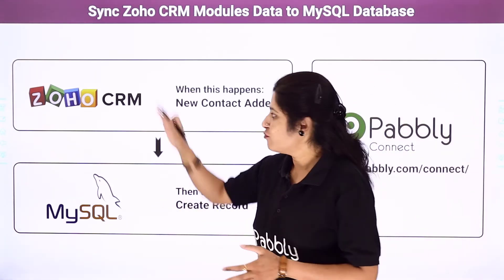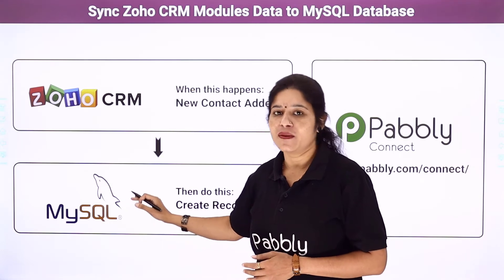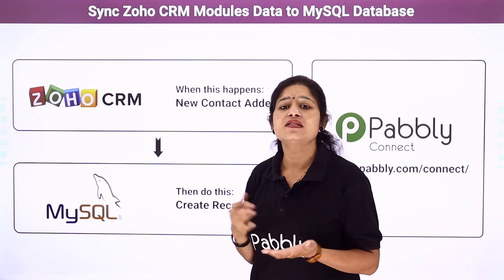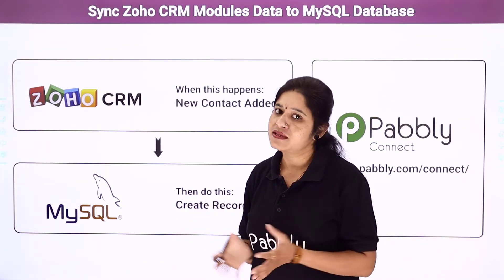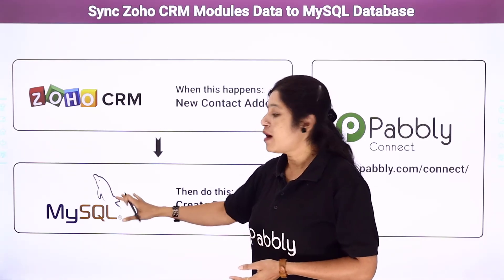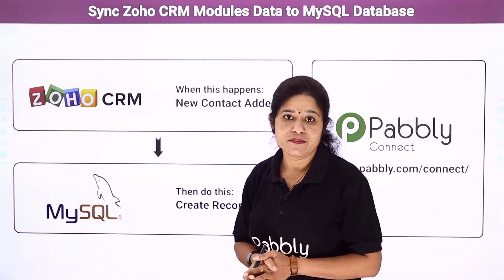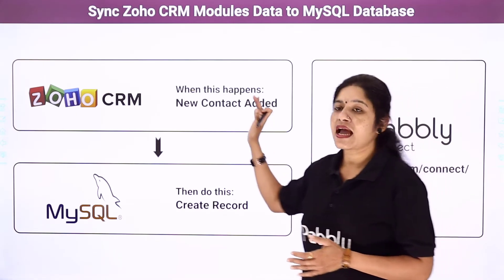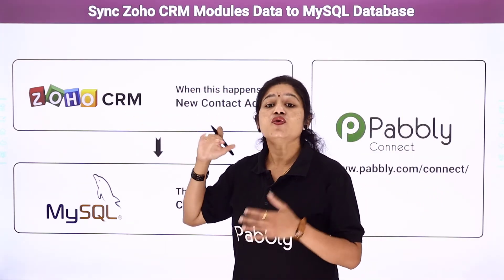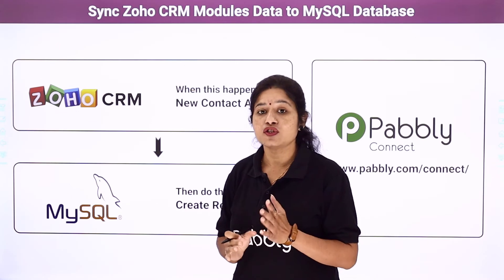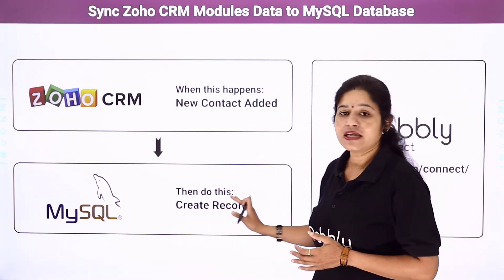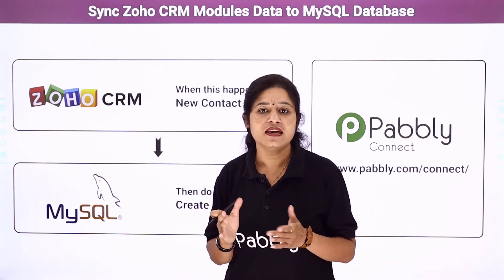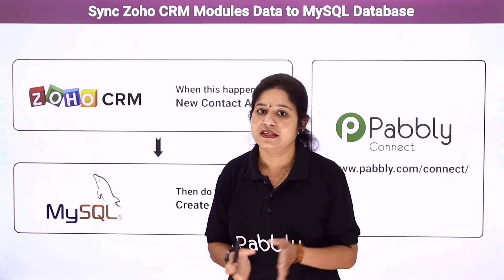First let us understand what these software applications are all about. Zoho CRM is a CRM software application which can be used for sales, marketing, support and other business related activities, and MySQL is a database management software. The idea here is that whenever a new contact is added to your Zoho CRM contact list through web form submissions, automatically a new record should get generated into your MySQL database, so that a customer database can be created and used for other business related activities.